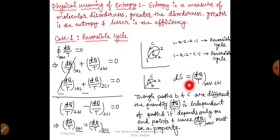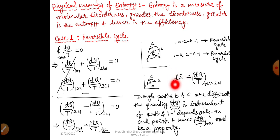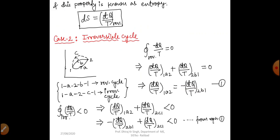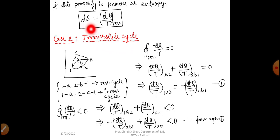Heat and work are path functions, so we use δ for them. But dS is a property and properties are always point functions. So: dS = δq/T (reversible) is our entropy relation. Now we want to find the value of entropy in an irreversible cycle. For that, we take one reversible path and one irreversible path — making one reversible cycle (1A2B1) and one irreversible cycle (1A2C1).